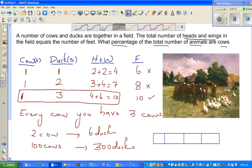Can I say you've got one cow? So you've got this is one cow. This is duck, this is duck, and this is duck. Now from this, can you think what percentage of the animals are cows?